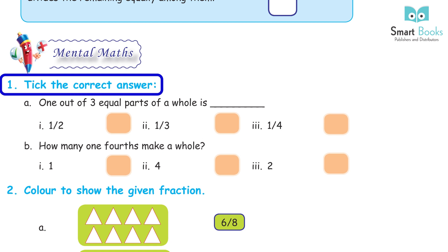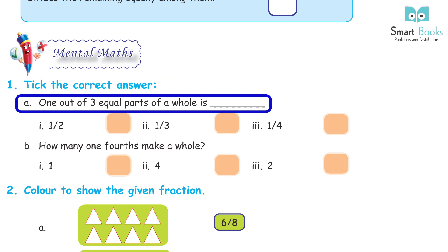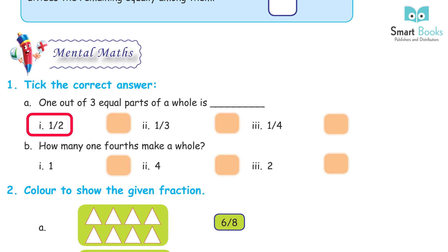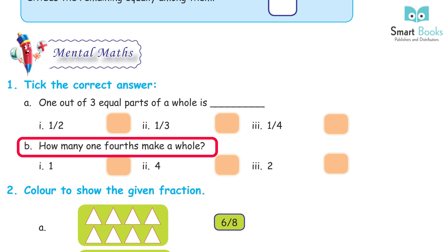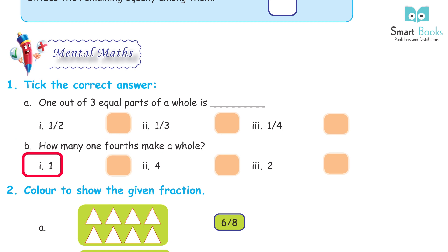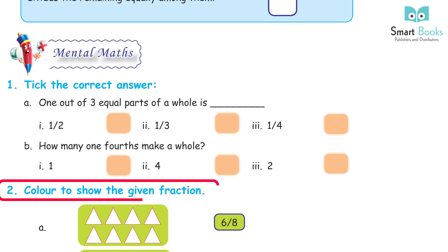Mental Math. Question 1: Take the correct answer. A) 1 out of 3 equal parts of a whole is — 1 upon 2, 1 upon 3, or 1 upon 4? Answer: 1 upon 3. B) How many one-fourths make a whole? Options: 1, 4, or 2. Answer: 4. Question 2: Color to show the given fractions.